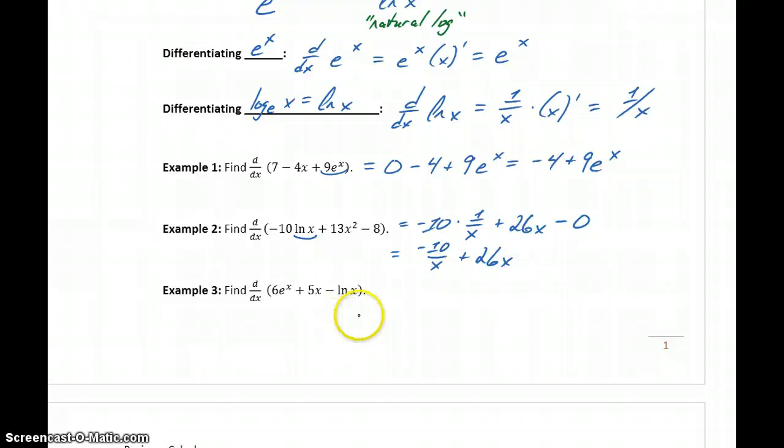And in our last example here, example 3, we get 6 e to the x, so 6 is our constant multiple, the derivative of e to the x is e to the x, the derivative of 5x will just be 5 minus 1 over x, the derivative of that natural log function.